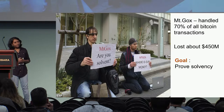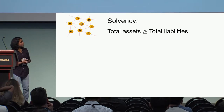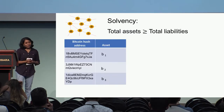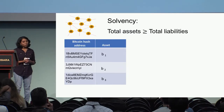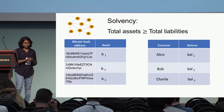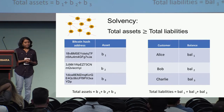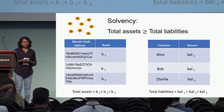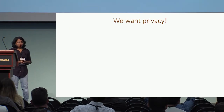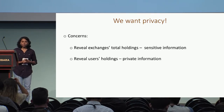The goal here is for exchanges to prove that they are solvent. Solvency means the exchange controls enough assets to clear each of its customers' balances. This is easy to do if it is public what Bitcoin addresses an exchange controls and a list of its customers along with their balances — one can compute total assets and total liabilities and check that assets are at least as much as liabilities. But this is of course not private, as it reveals both the total holdings of the exchange and the holdings of each of its customers.